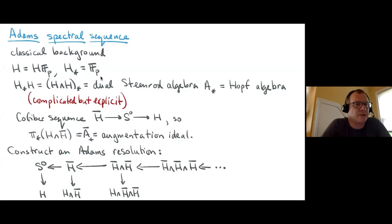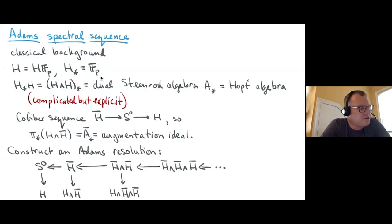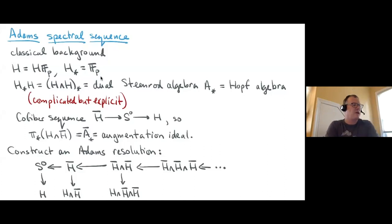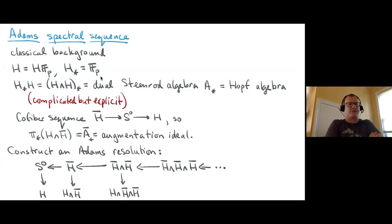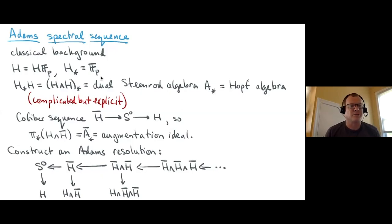We're going to talk about the Adams spectral sequence. Since this is a summer school and the first week, I'll spend time covering the background. I'll discuss what the Adams spectral sequence is, how you construct it, and why this construction ought to be useful. I'll write H for HF_p, the Eilenberg–MacLane spectrum at a prime p — though in my own head I always think p = 2.